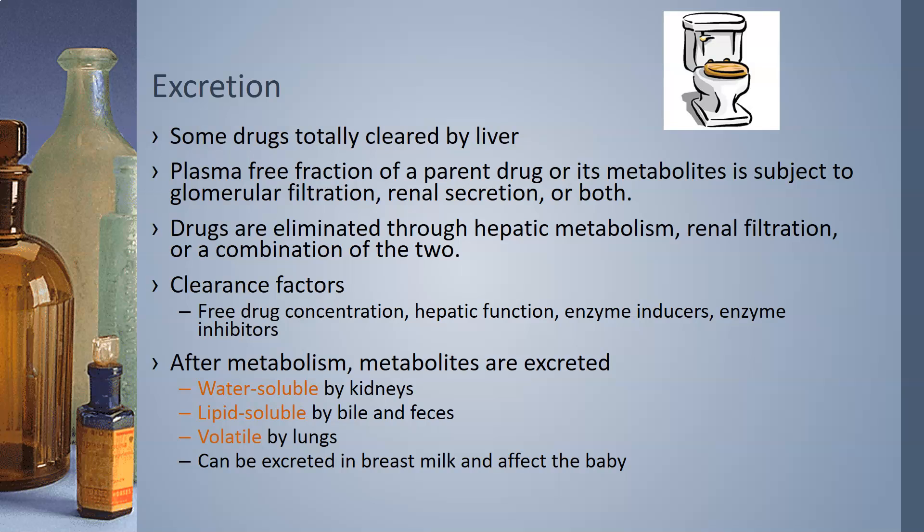After metabolism, metabolites are excreted by the liver. If they are water soluble, they enter the bloodstream and are excreted by the kidneys. If they are lipid soluble, they enter the bowel and are secreted through the GI system, leaving through feces. If they are volatile, they are exhaled by the lungs. Drugs can also be excreted in breast milk and affect the baby, so it's very important to pay attention to what a nursing mother ingests.